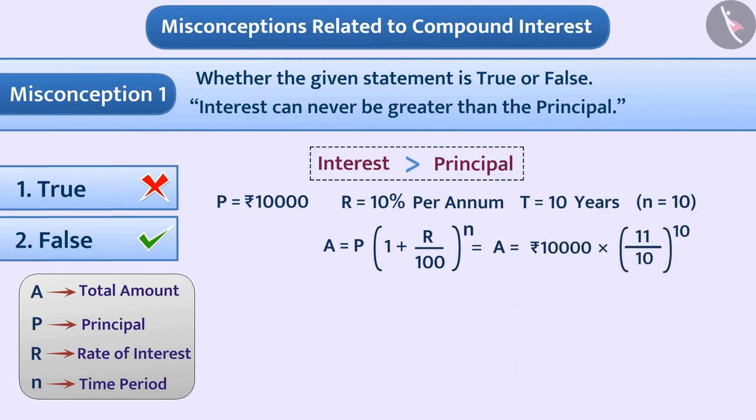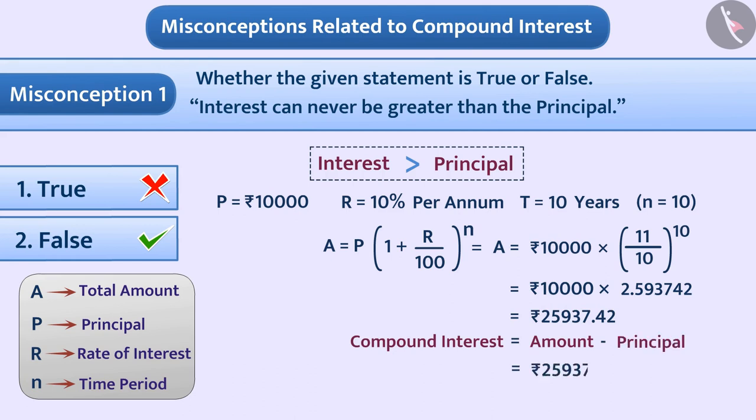With the help of calculator, we get approximate value of (11 by 10) raised to the power 10 as 2.593742. In this way, A is equal to 10,000 rupees multiplied by 2.593742, which equals 25,937.42 rupees. Since compound interest equals amount minus principal, which is 25,937.42 rupees minus 10,000 rupees, equals 15,937.42 rupees.